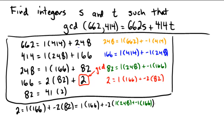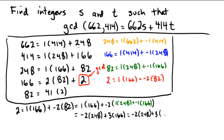After distributing and collecting like terms, negative 2 times 1 gives me negative 2 copies of 248. Then with negative 2 and negative 1, that would be 2 plus the 1 copy over here, leaving me with 3 copies of 166. Now I can replace the 166 with its blue version: negative 2 times 248 plus 3 times the blue 166, which is 1 copy of 414 plus negative 1 copies of 248.